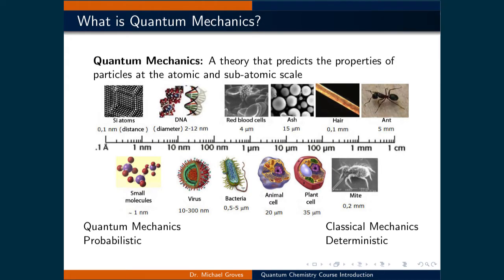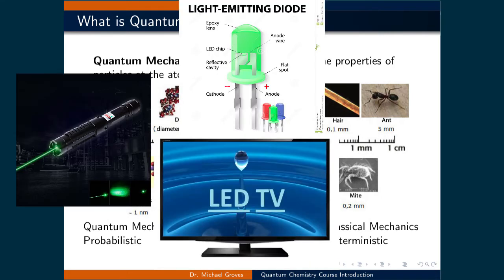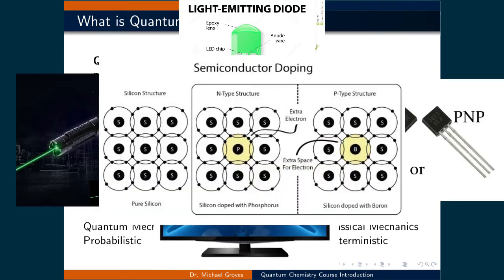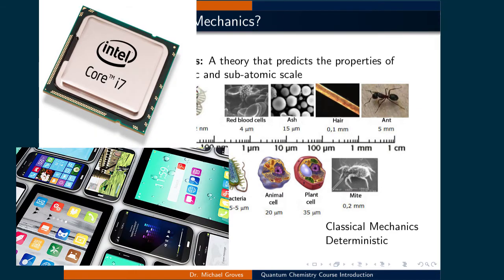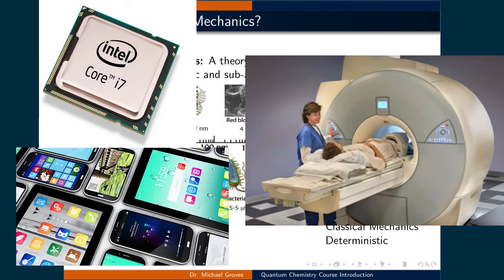Quantum mechanics is a theory that best predicts the properties of particles at the atomic and subatomic scale. It is arguably one of the most successful theories in the history of science, and it has allowed humanity to predict and create, among other things, lasers, light-emitting diodes, transistors, and semiconductors, leading to several important technologies such as the microprocessor and non-invasive medical imaging techniques.